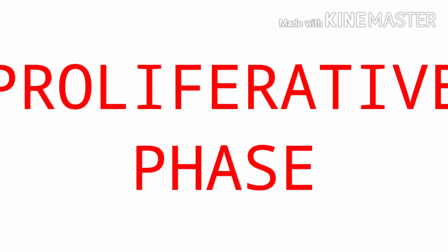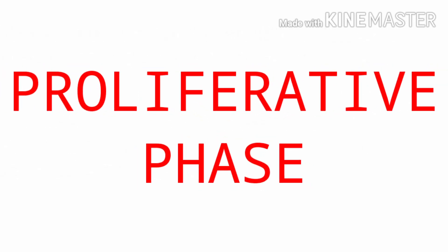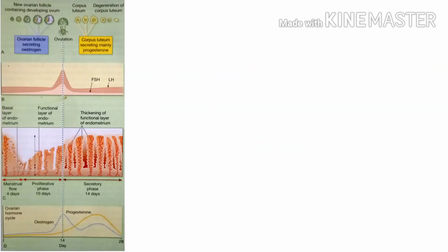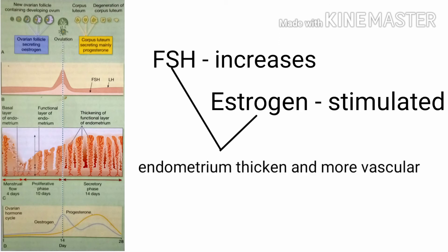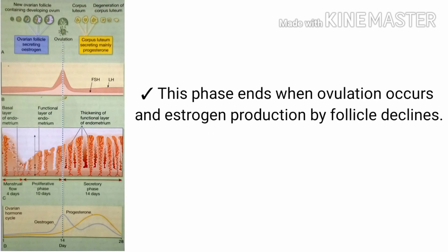Now we will learn about the second phase — the proliferative phase. In this phase, follicle-stimulating hormone output increases and estrogen secretion is stimulated. This causes the endometrium to thicken and become more vascular. This phase ends when ovulation occurs and estrogen production by the follicle declines.